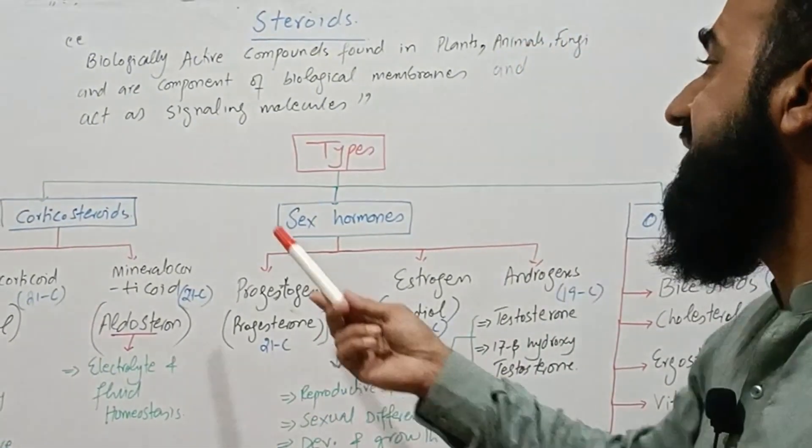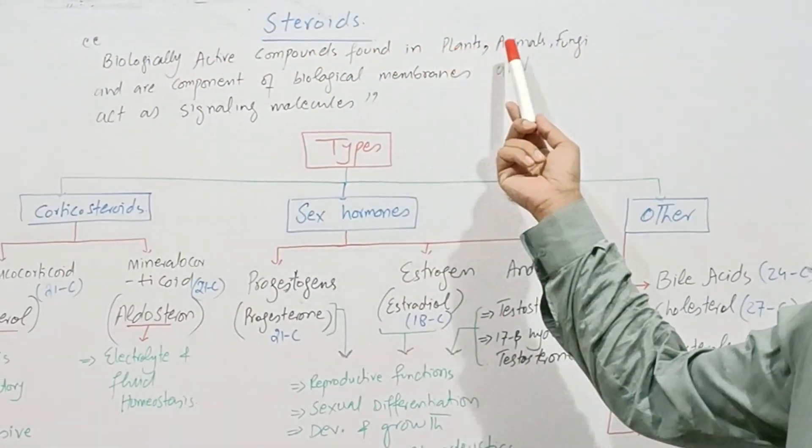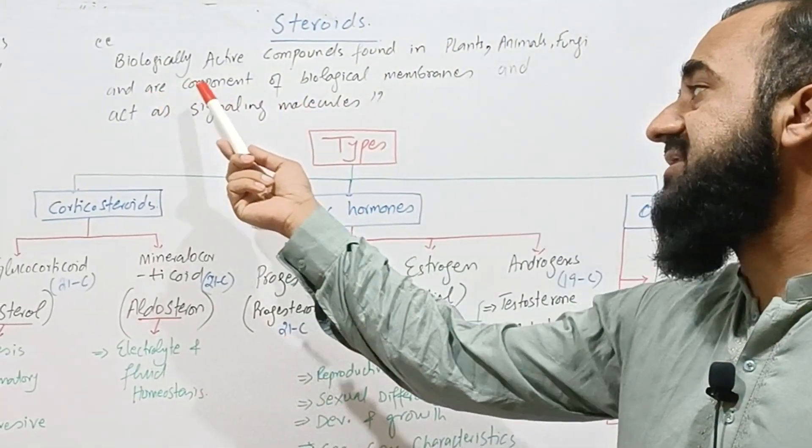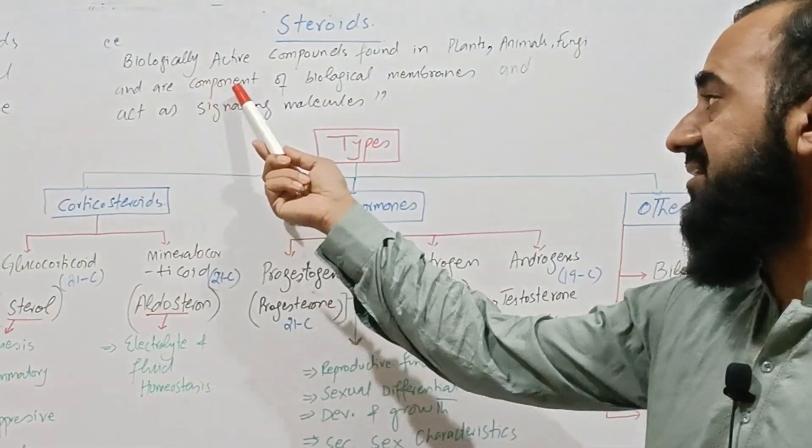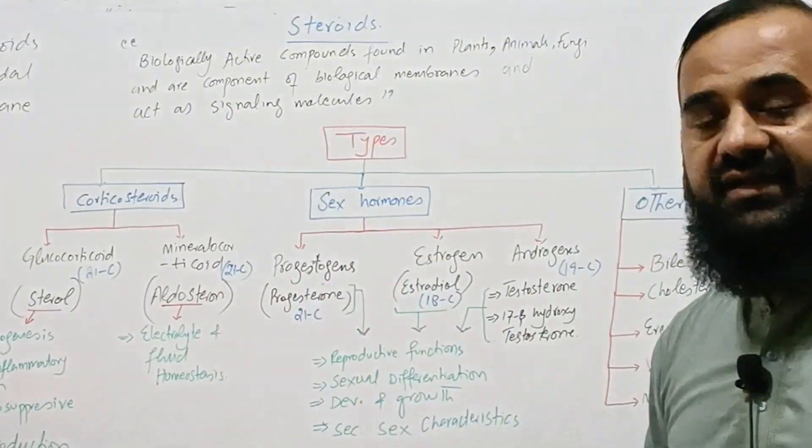So what are steroids? These are biologically active compounds found in plants, animals and fungi, and their two principal functions are: these are component of biological membranes and act as signaling molecules.